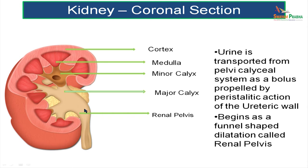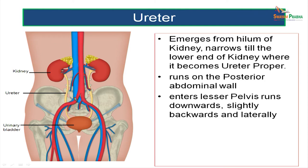The ureter begins as a funnel-shaped dilatation called the renal pelvis. The ureters emerge from the hilum of the kidney, and narrow till the lower end of the kidney where it becomes the ureter proper.